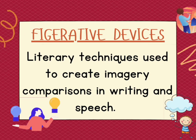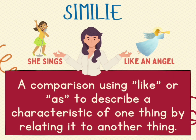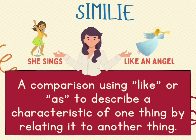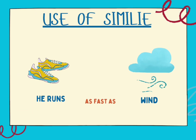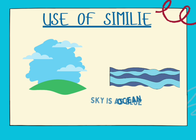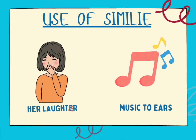One of the most common figurative devices is simile. Simile is a comparison using 'like' or 'as' to describe a characteristic of one thing by relating it to another thing. See these for instance: She sings like an angel. He runs as fast as the wind. The sky is as blue as the ocean. Her laughter is like music to my ears.